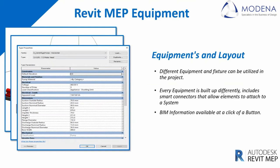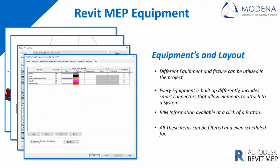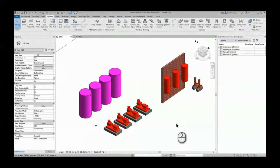You can find electrical data, dimension data according to that specific family, and any type of mechanical piping data included. All of these items can be filtered and even scheduled for. So even though it looks like a grey blob on your Revit screen, you can filter out for a specific coloration that you are utilizing within your standard and discipline — water pipes being blue, fire pipes being red, sanitary pipes being green and brown. You can utilize those colorations within the filter dynamics of Revit.